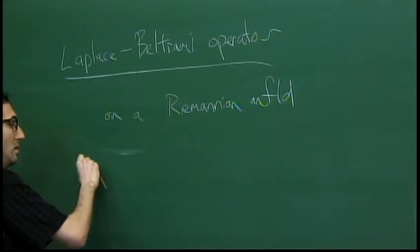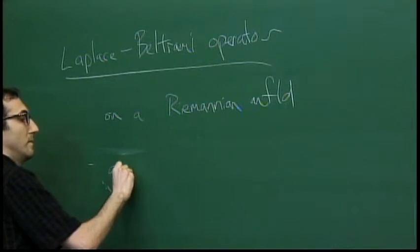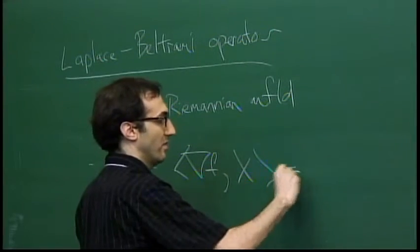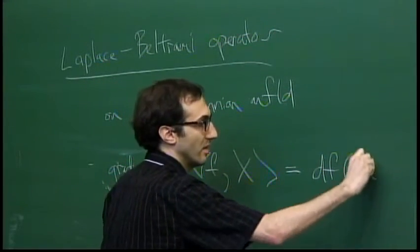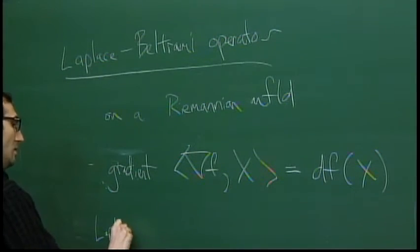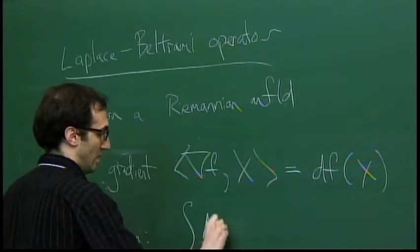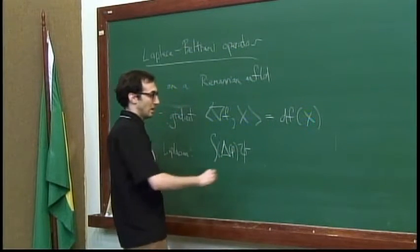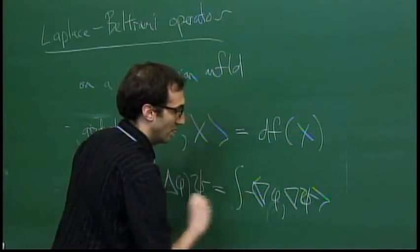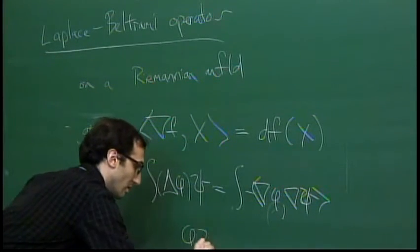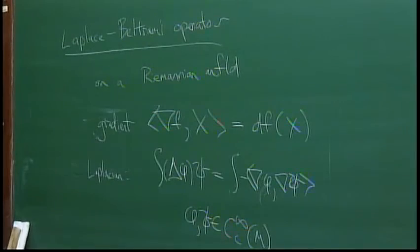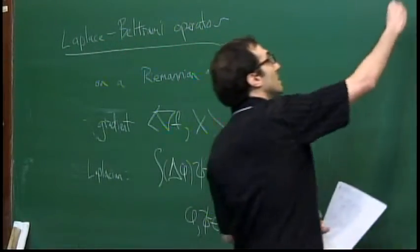First you define the gradient: take the gradient of a smooth function to get a vector field, where the inner product with a vector x gives the directional derivative of f in direction x. Then the Laplacian is the divergence of the gradient. To take the Laplacian of φ, integrate it against another function ψ, move the derivative, and you get the inner product of the two gradients — this holds for smooth, compactly supported functions. That's a quick definition of the Laplace-Beltrami operator, and now I'm interested in eigenvalues.